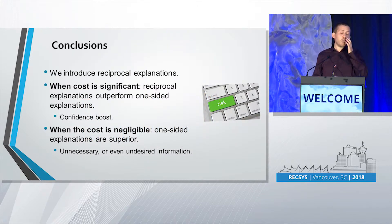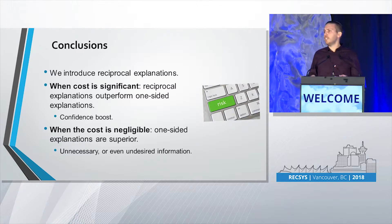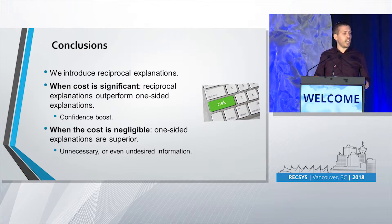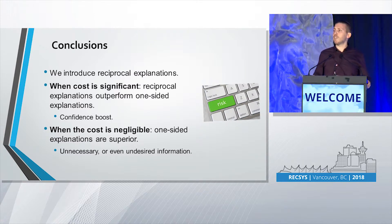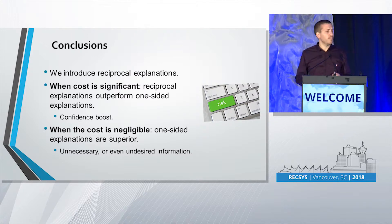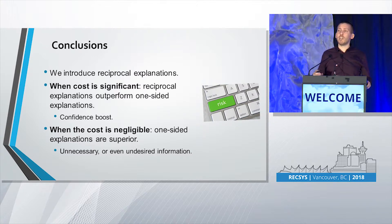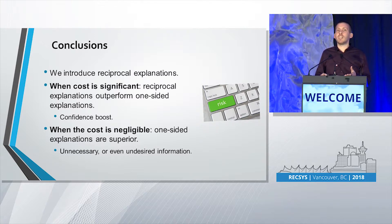In conclusion, in our work we introduced a new form of explanation which we called reciprocal explanations. When the cost is significant in accepting the recommendation, reciprocal explanations outperform one-sided explanations. We believe this is because reciprocal explanations increase the confidence of users in positive outcomes of accepting the recommendation and sending a message, and therefore they are willing to take the risk. On the other hand, when the cost is negligible, one-sided explanations were actually superior — when there's no cost involved, the extra information about the other side is unnecessary and may even cause information overload, which is why it's undesired.